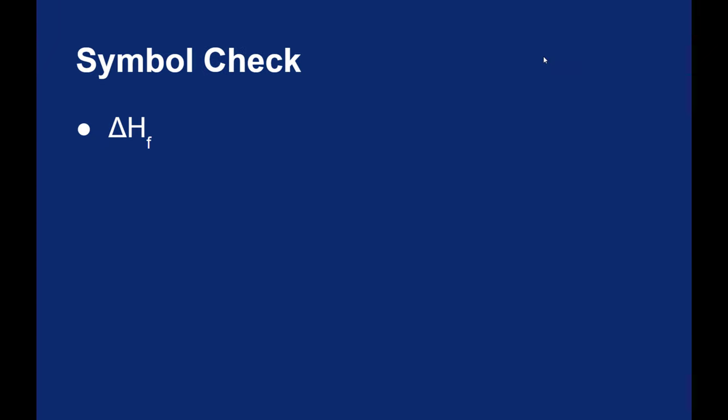So we have a lot of variables here. We've seen ΔH_f, that's the heat of formation. That's how much energy is absorbed or released when you form a compound from its pure elements.